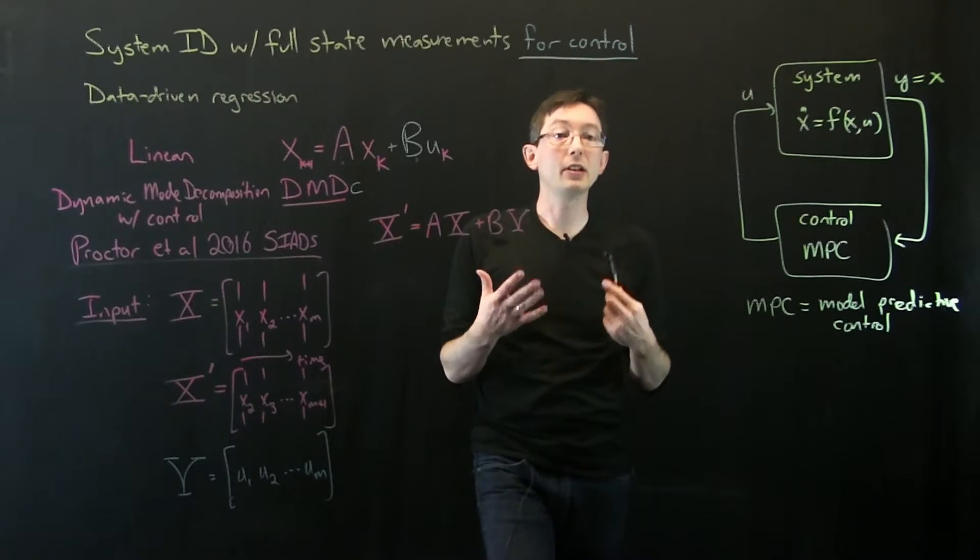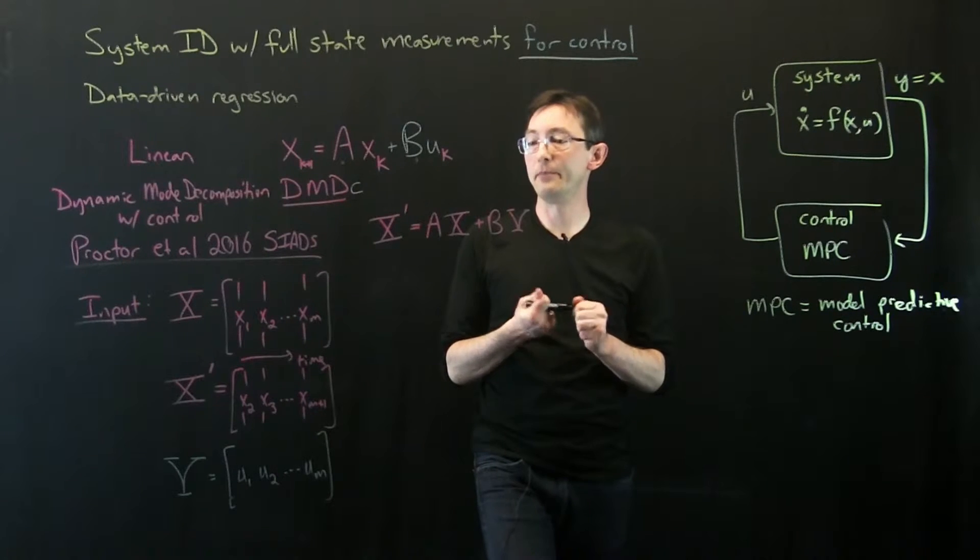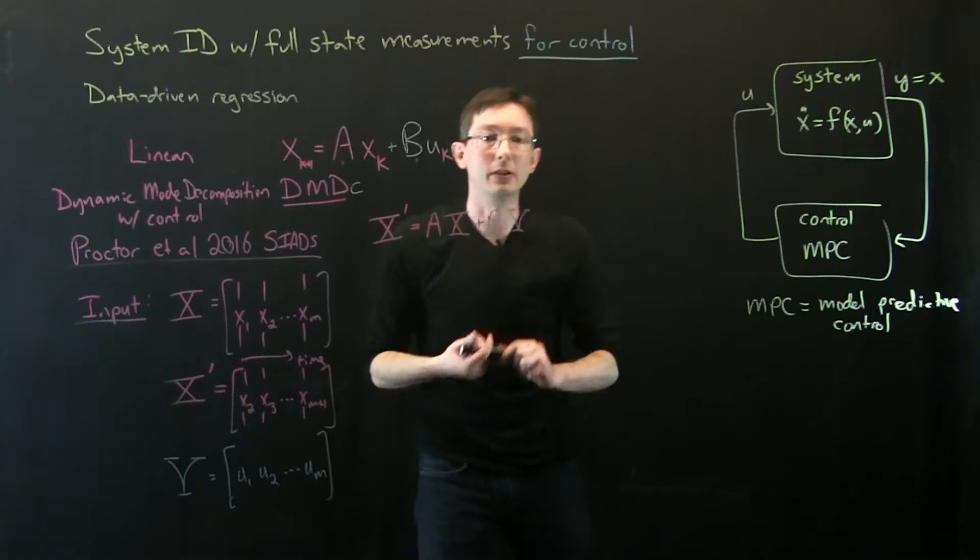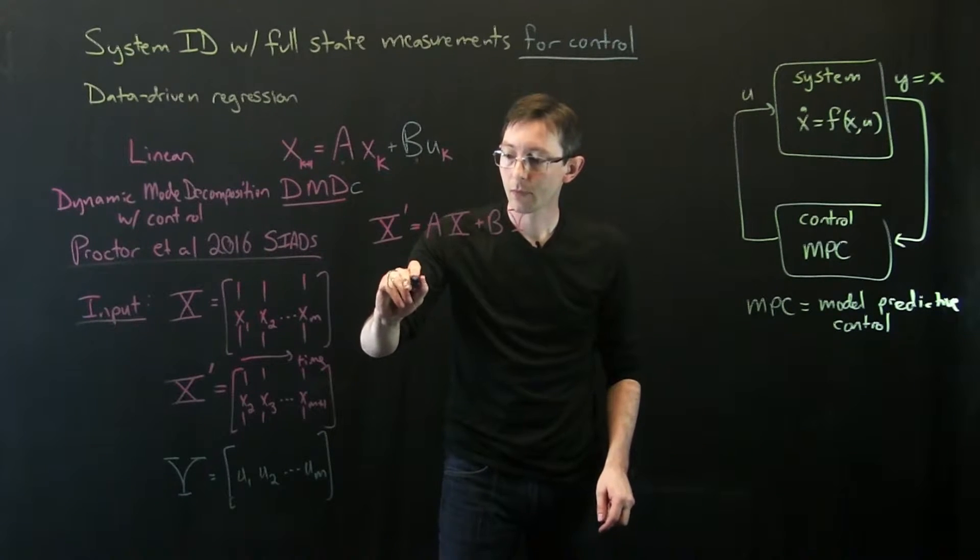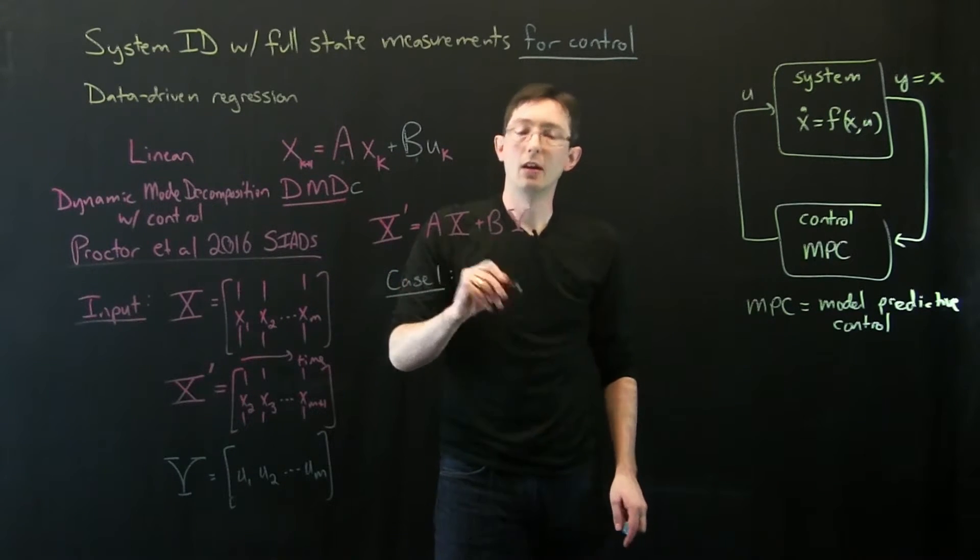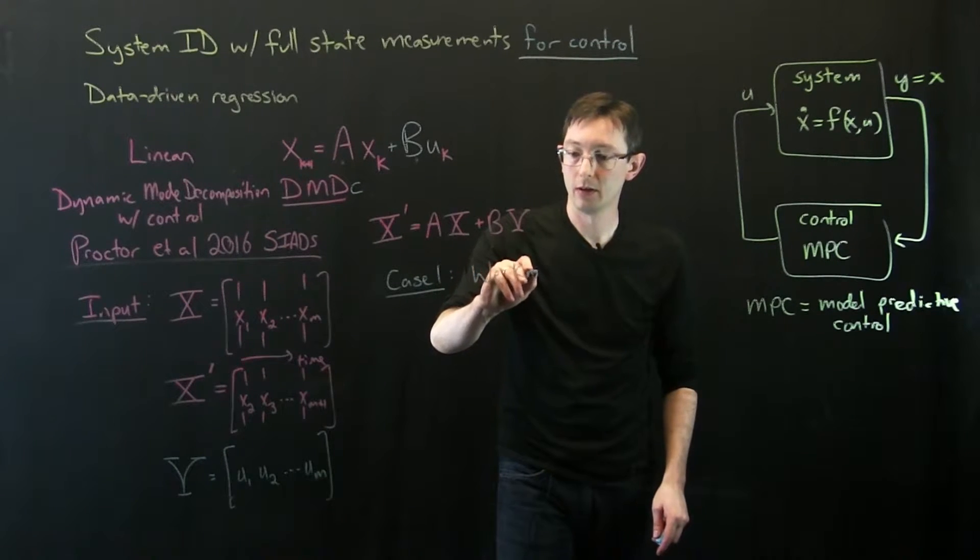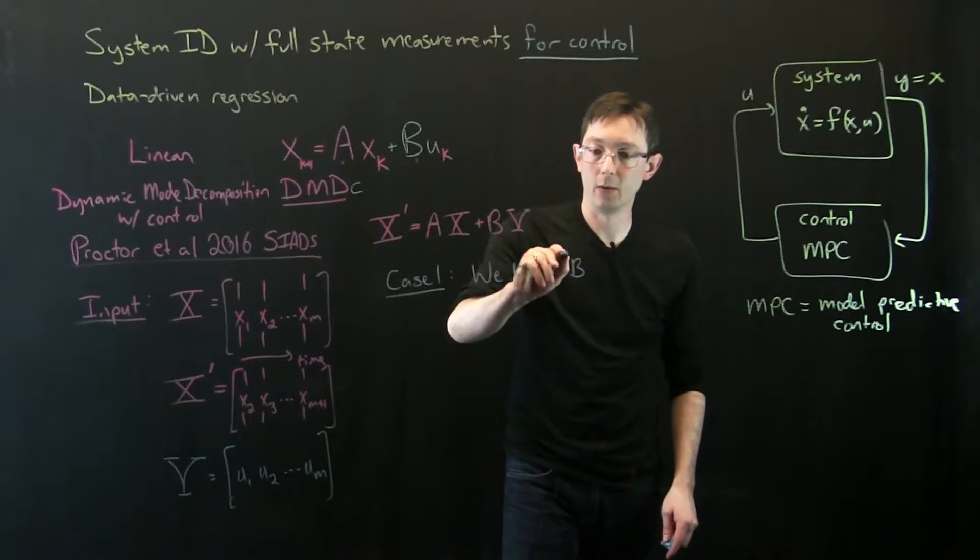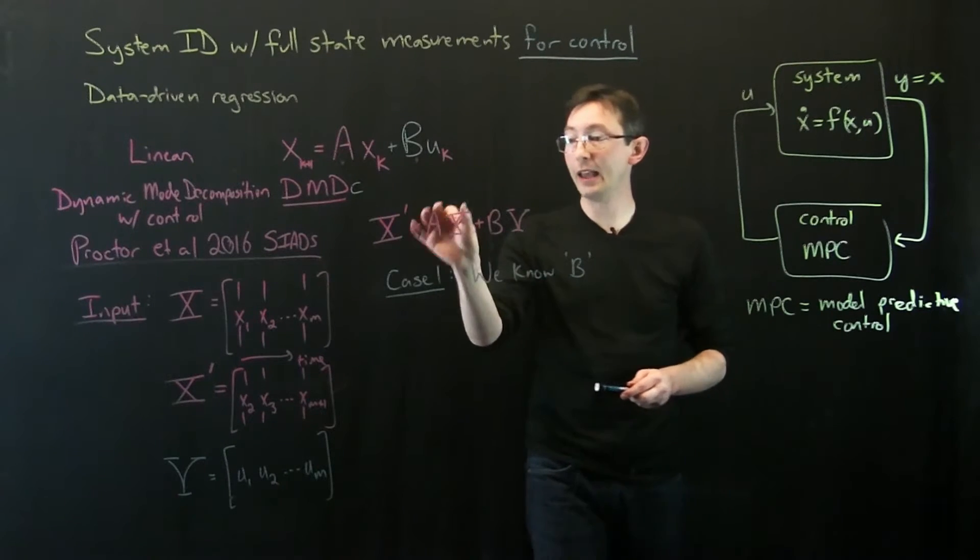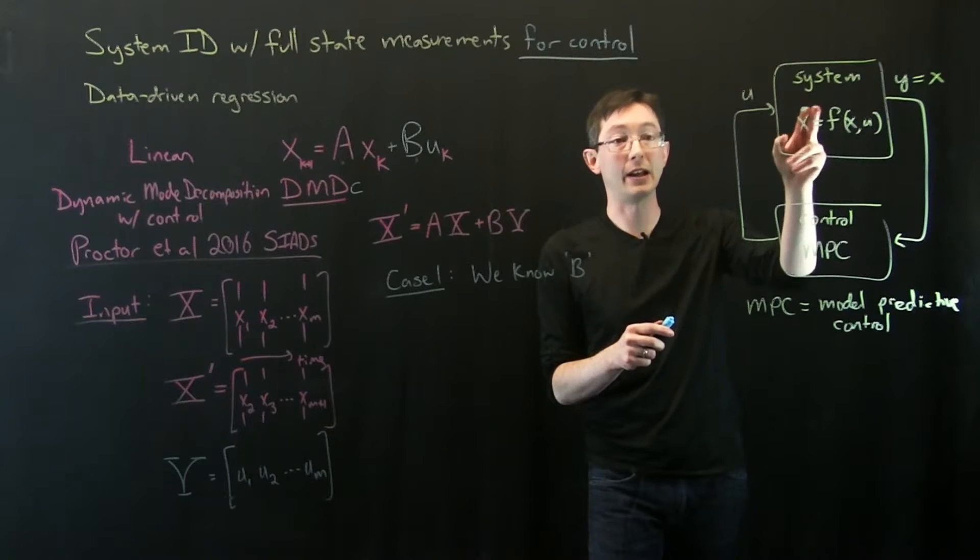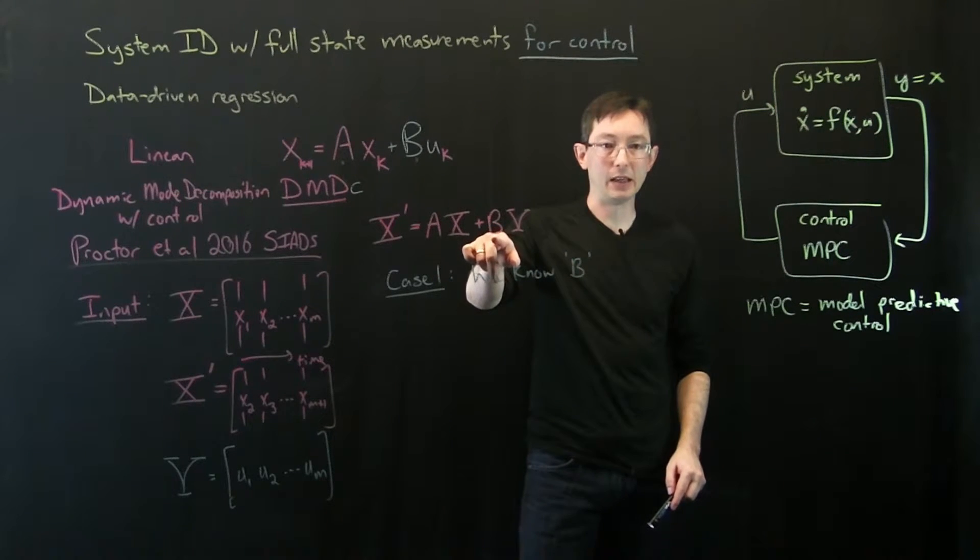So there are a couple of interesting cases here. Case one is a little bit more trivial. In case one, we actually know what B is. Let's say we know what the B matrix is. So A is unknown, but we know what B is. We know how we're affecting the system, but we don't know the dynamics A.